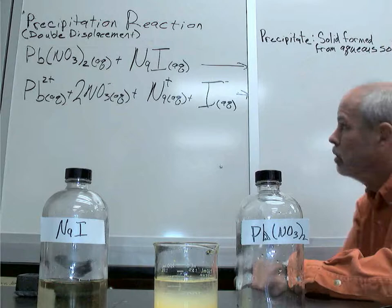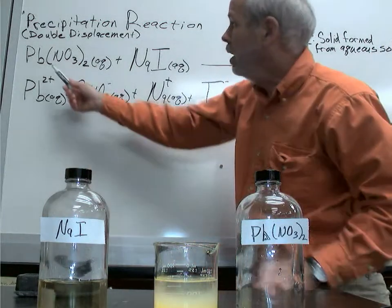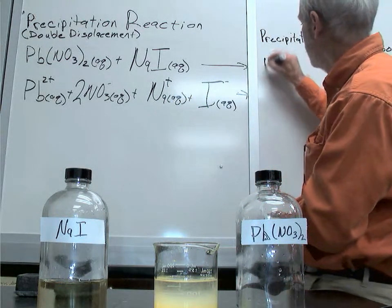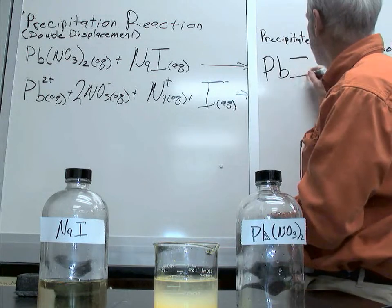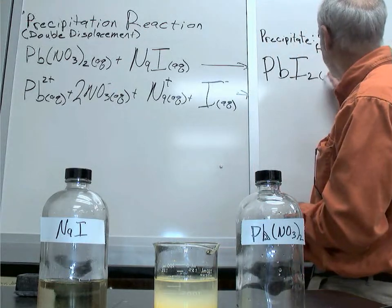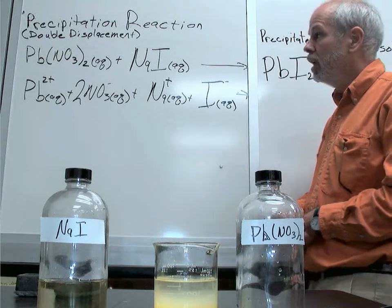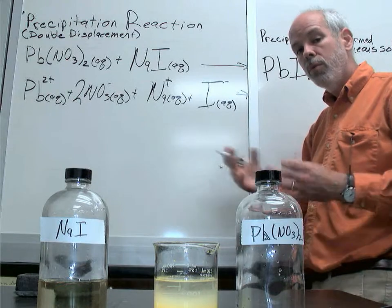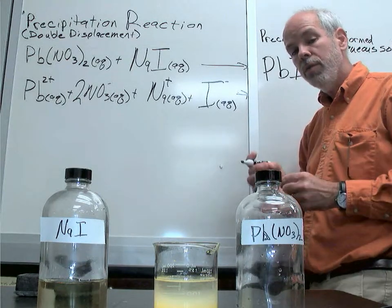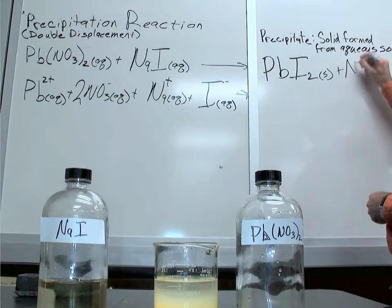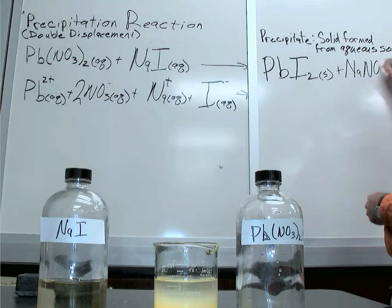We'll write it out this way. When the aqueous lead runs into the aqueous iodide, we will get PbI2. Since it's a murky solid compound, we're going to write it as a solid. And then the leftover ions — the sodium and the nitrate — are still going to be aqueous, but we're going to write them as the compound they would make if we had removed the water. That'll be NaNO3 aqueous.